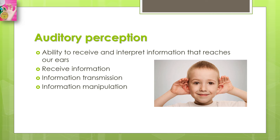We have also discussed the structure and functions of the ears in a previous video — the link is in the description. What actually happens in auditory perception is that our ears are obviously involved. The processes involved in auditory perception are: receiving information, information transmission, and finally information manipulation. We'll be discussing these phases one by one.